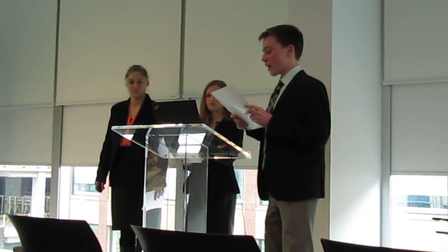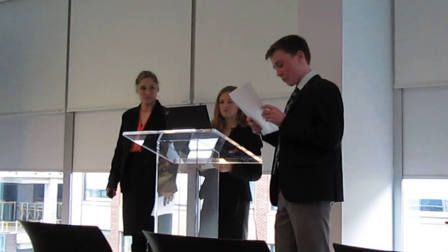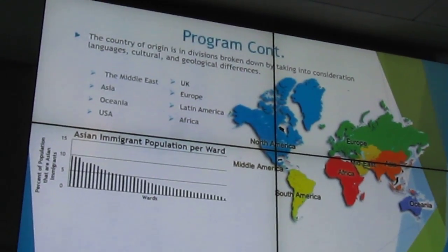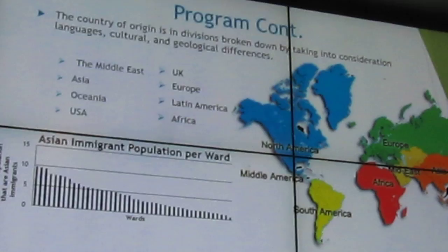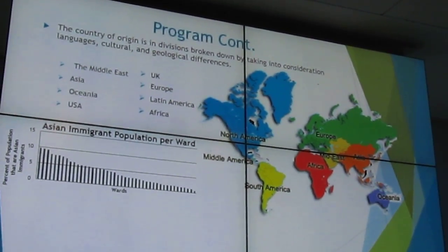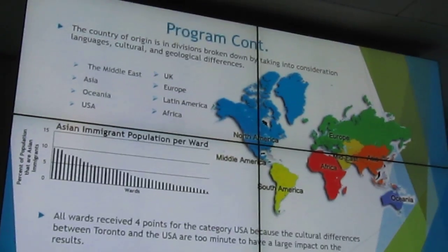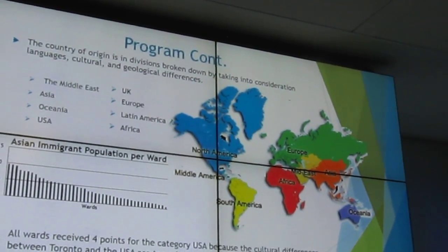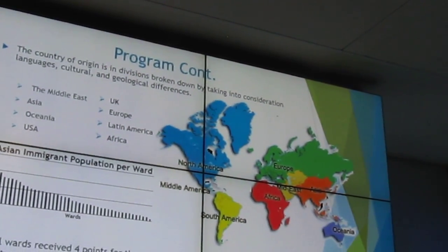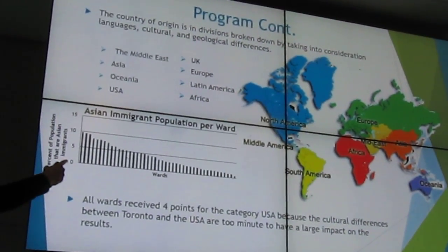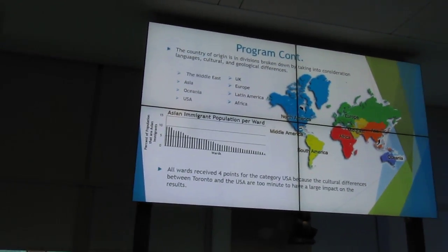The country of origin section was broken down into eight categories based on languages and cultural differences between regions: the Middle East, the UK, Asia, Oceania, Europe, Latin America (which we used as South America, Central America, and Mexico), the USA, and Africa. The USA was disregarded because different sections of the US are so polarizing and their culture is so similar to ours — so we gave them full points. The rest of the wards were scored on a customized scale capped at four points. For example, for Asia, one percent of the population was equal to half a point, so the top wards gained four points while the lowest wouldn't have gained even half a point.